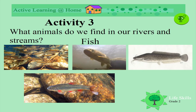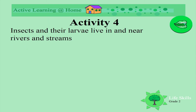What animals do we find in our rivers and streams? Fish, of course — very many different types of freshwater fish. Have a look at some of these examples. Some live in schools, and some you see more by themselves.